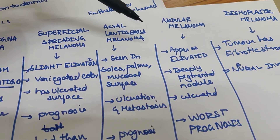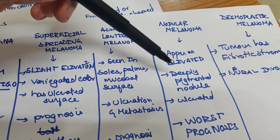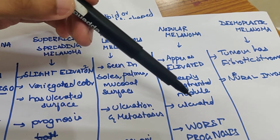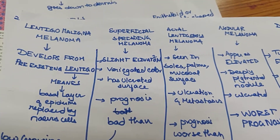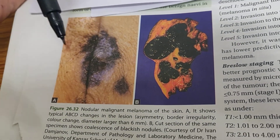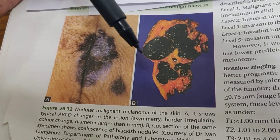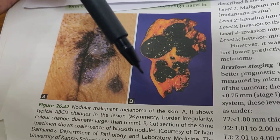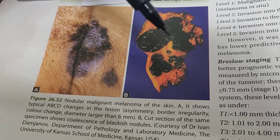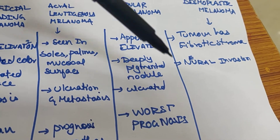Nodular melanoma appears elevated, similar to superficial spreading melanoma, is deeply pigmented with a nodular appearance, and is ulcerated. In the gross appearance shown here, it follows the ABCD criteria — on the cut surface, nodules are seen, the shape is irregular, the diameter is greater than 6 mm, and blackish nodules are visible. It has the worst prognosis.